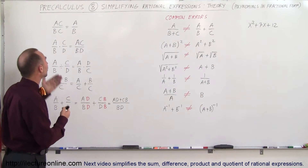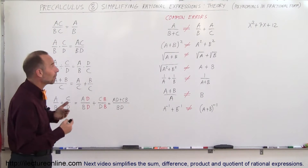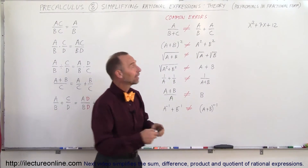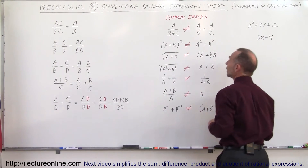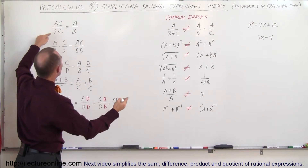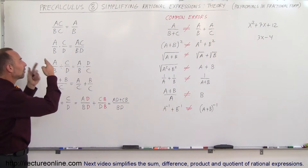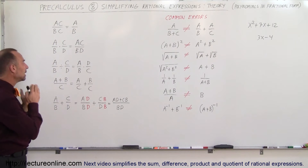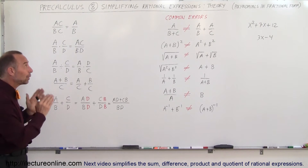Here we have some representations of fractional expressions. For example, if a equals x squared plus 7x plus 12 and b equals 3x minus 4, we can write a over b and so forth. We have a number of fractional expressions here, and we need to learn which operations we can and cannot do.